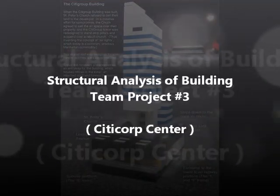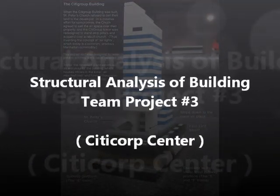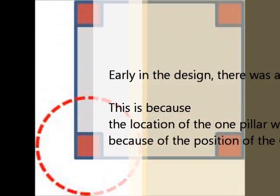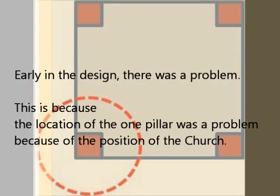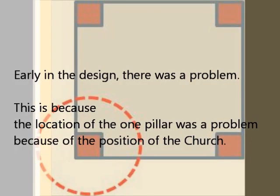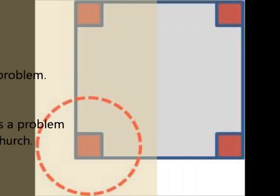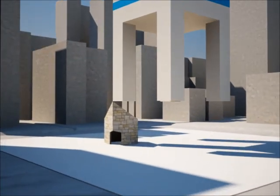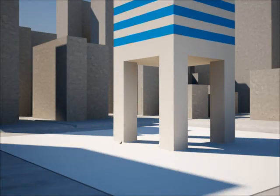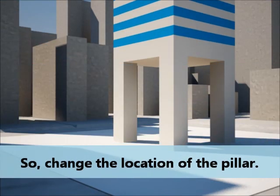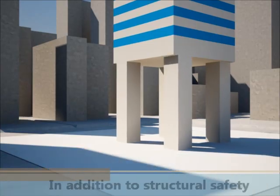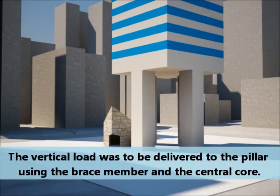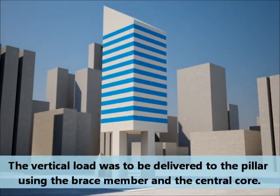Structural Analysis of Building Theme Project 3: The subject is the City Corp Center. Early in the design, there was a problem. The location of one pillar was a problem because of the position of the church. To resolve this, the location of the pillar was changed. In addition to structural safety, the vertical load was to be delivered to the pillar using the brace member and the central core.